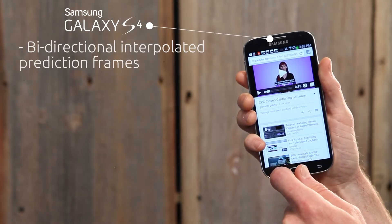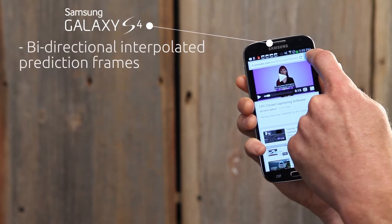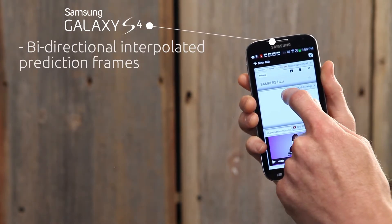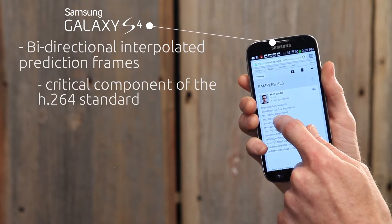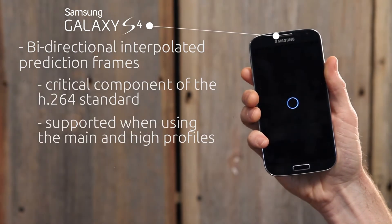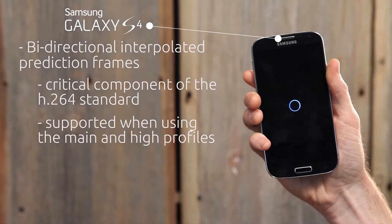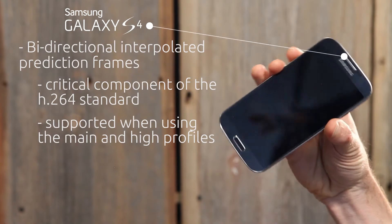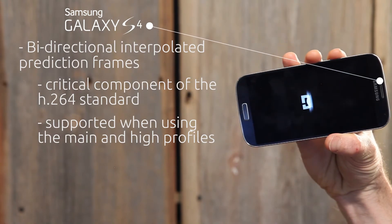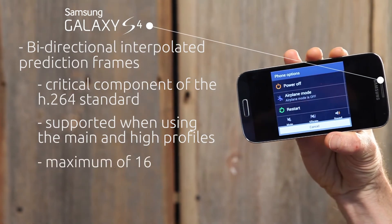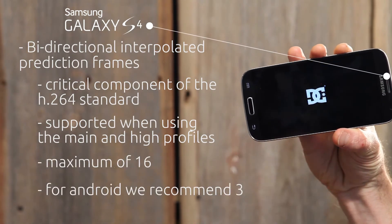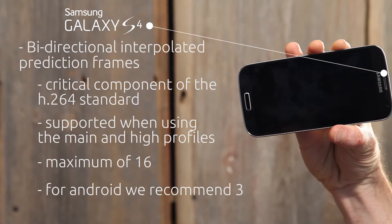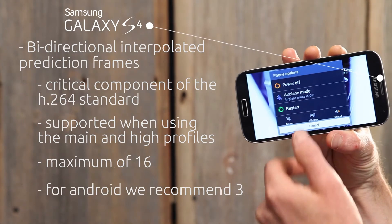BF, or bi-directional interpolated prediction frames, are a critical component of the H.264 standard, and are only supported when using the main and high profiles. Generally, this is set to the maximum of 16; however, for Android, we recommend 3.